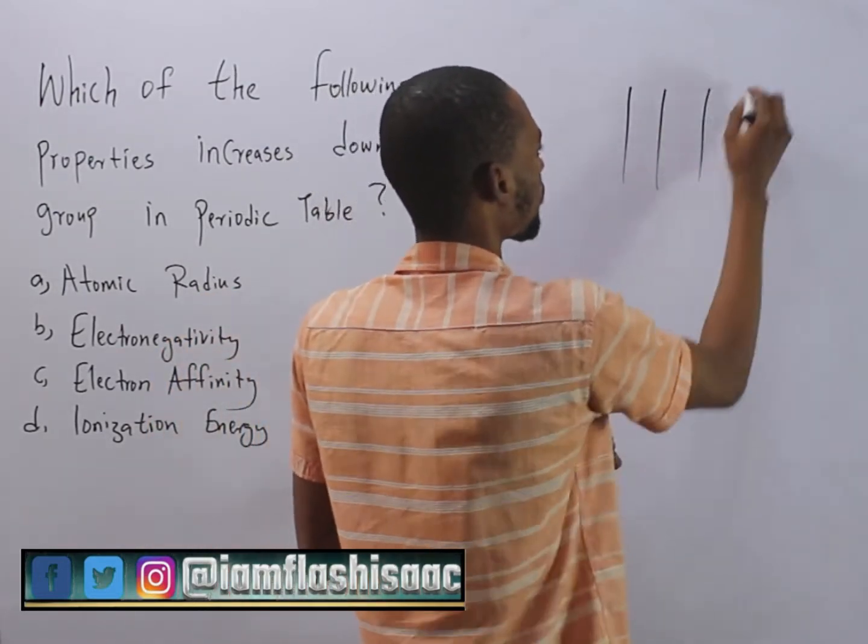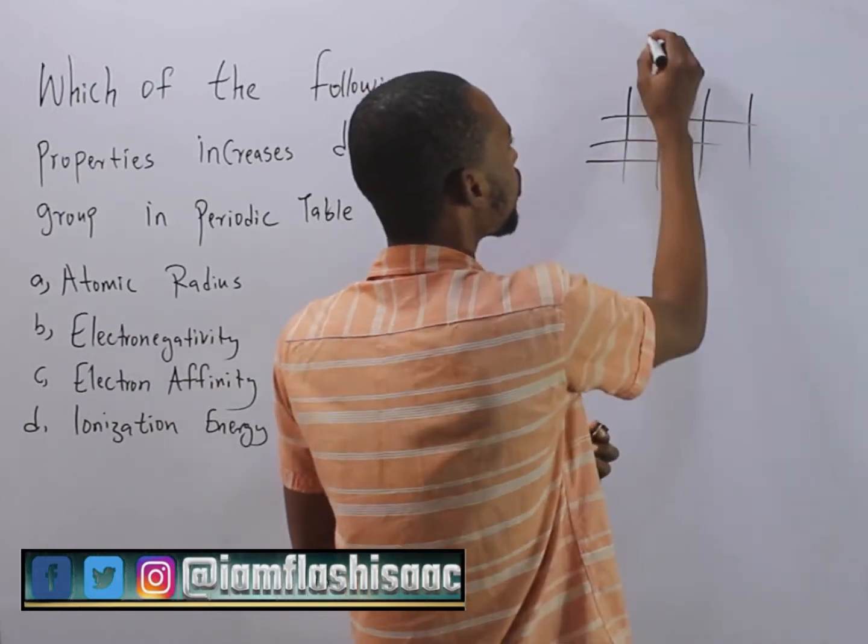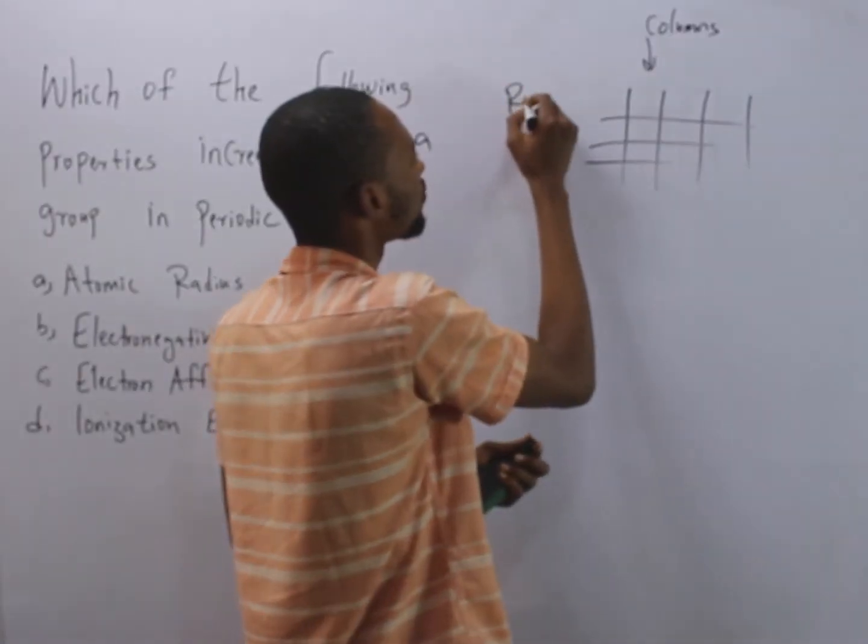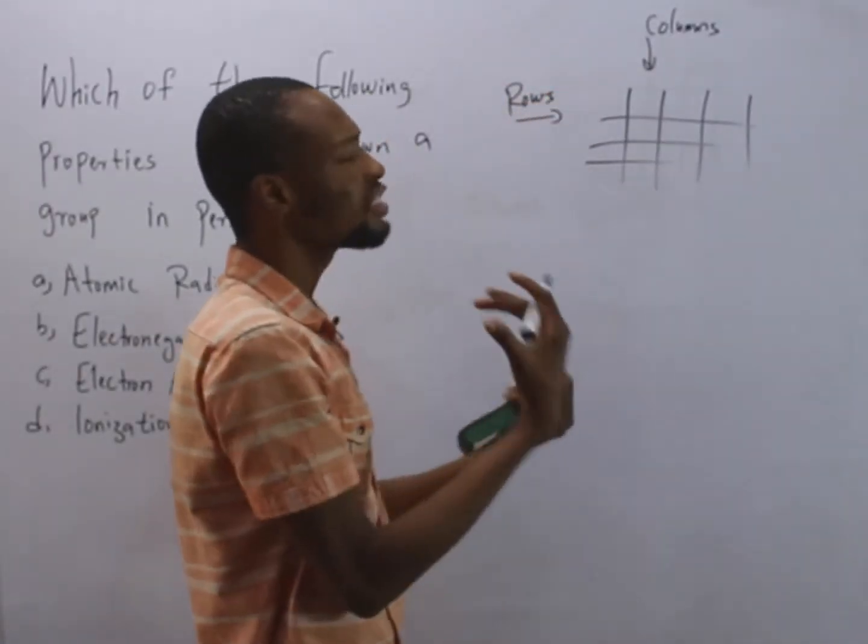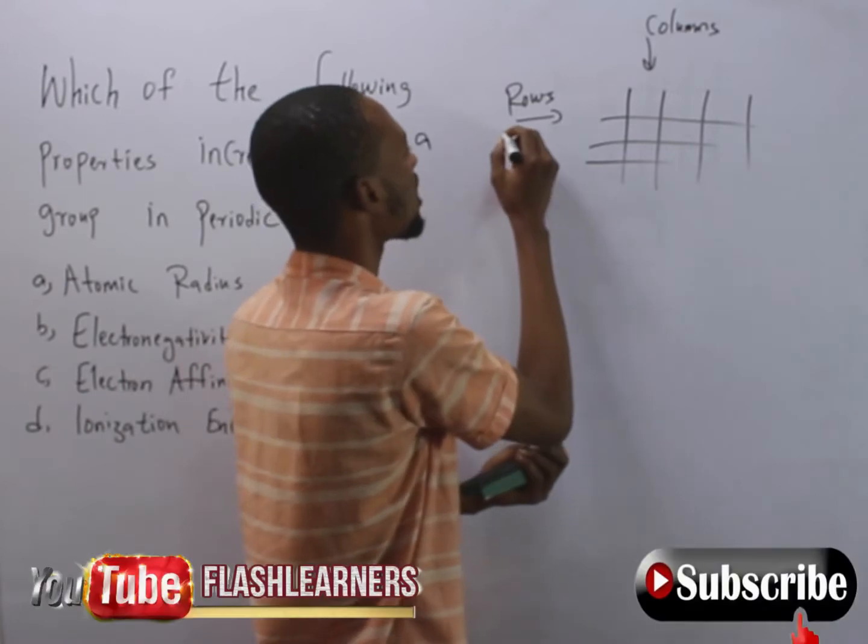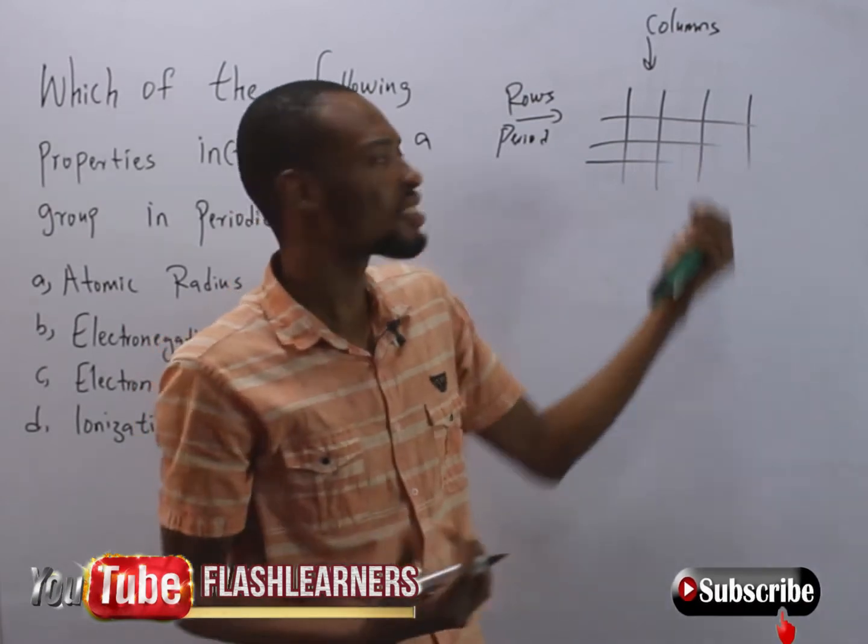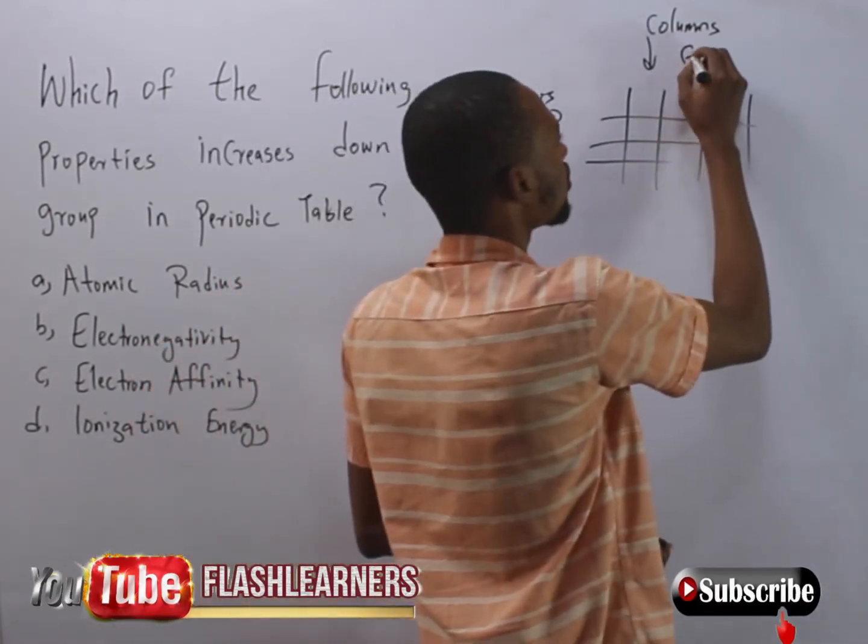So periodic table has columns and rows. The rows is referred to as period and the columns are referred to as groups.